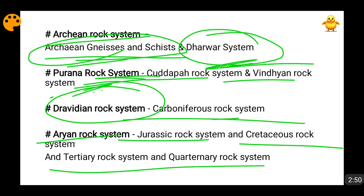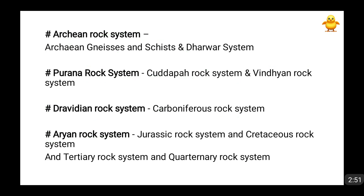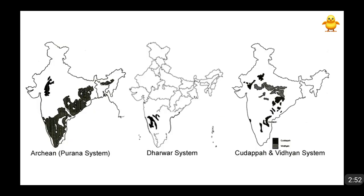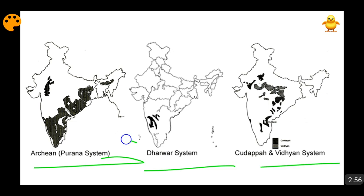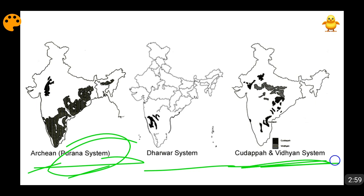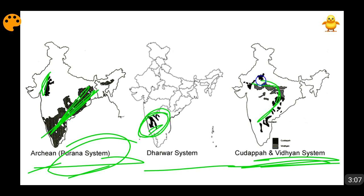Then come the Tertiary rock system and the Quaternary rock system. The Quaternary rock system is actually a part of the Tertiary rock system. So all of these things we will be seeing friends. This is basically the figure. As I have told you, the Purana system is also known as Archean but its sub-classification is Cudappa and Vindhyan. So these are the orientations of the Archean rocks friends. Then here comes the Dharwar system and there comes the orientation of the Cudappa and Vindhyan system.